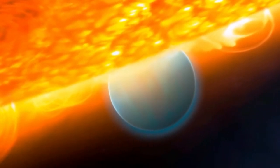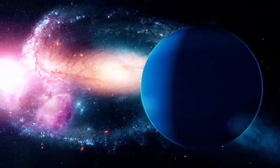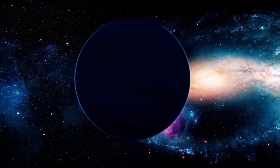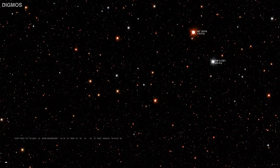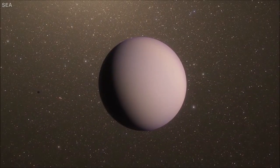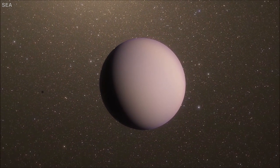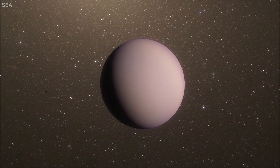WASP-96b is one of more than 5,000 confirmed exoplanets in the Milky Way. Located roughly 1150 light-years away in the southern sky constellation Phoenix, it represents a type of gas giant that has no direct analog in our solar system.